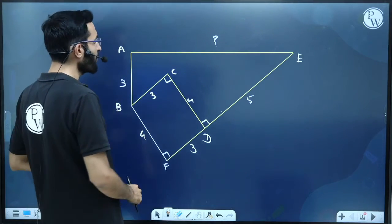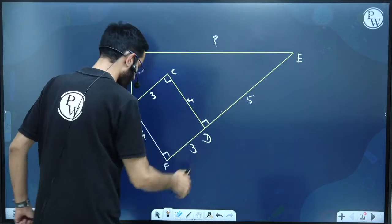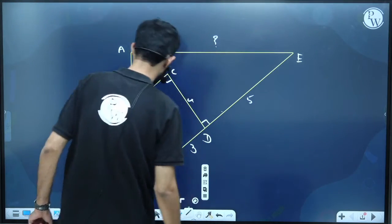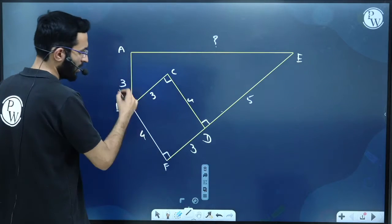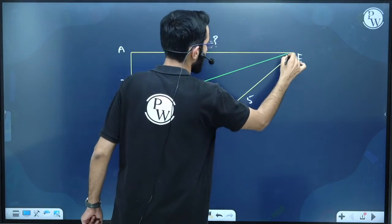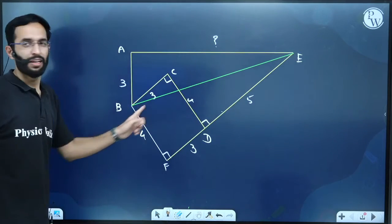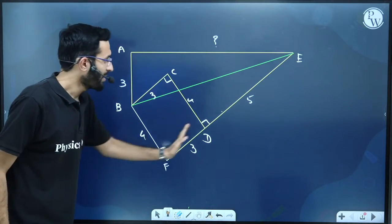Now if you observe, our ultimate aim is to find AE. To find AE, let us do one thing. From this 4, can I find BE or not? You can observe this as a right angle triangle.